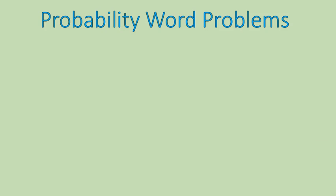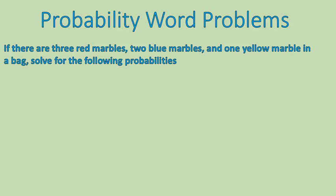Now, when we're talking about word problems with probability, you're doing the same thing, only you're taking all your information from the word problem. So let's take a look. If there are three red marbles, two blue marbles, and one yellow marble in a bag, solve for the following probabilities. This one here is the probability of drawing a red.